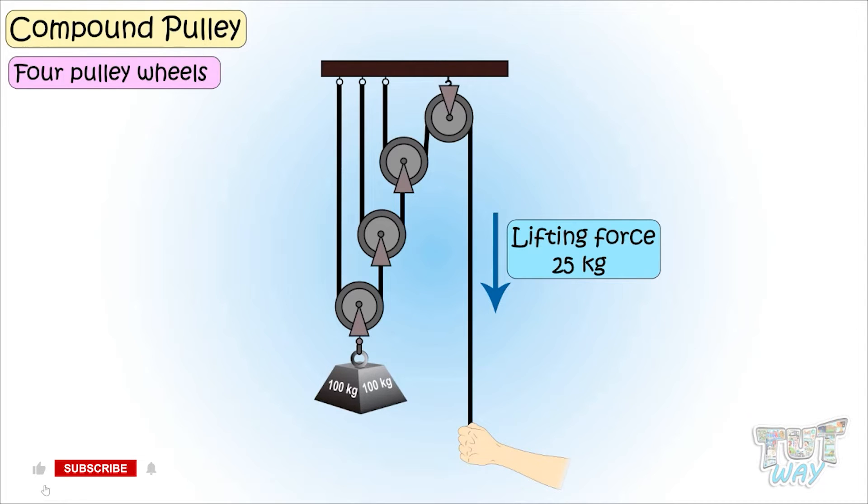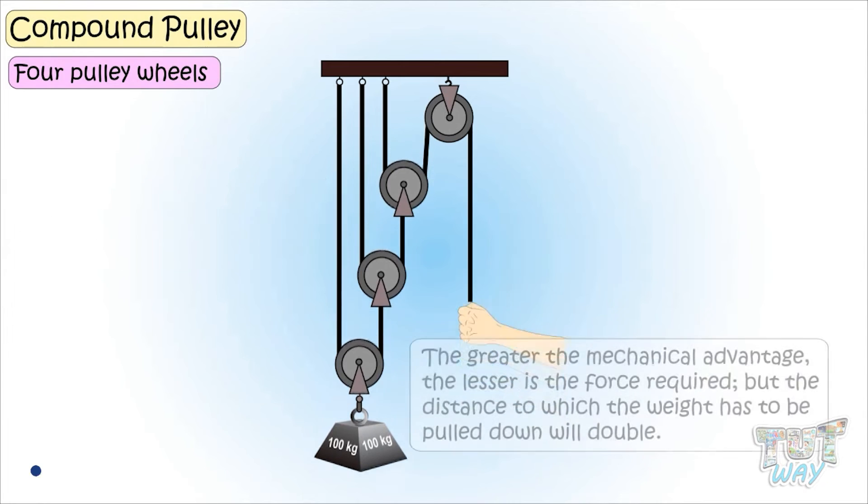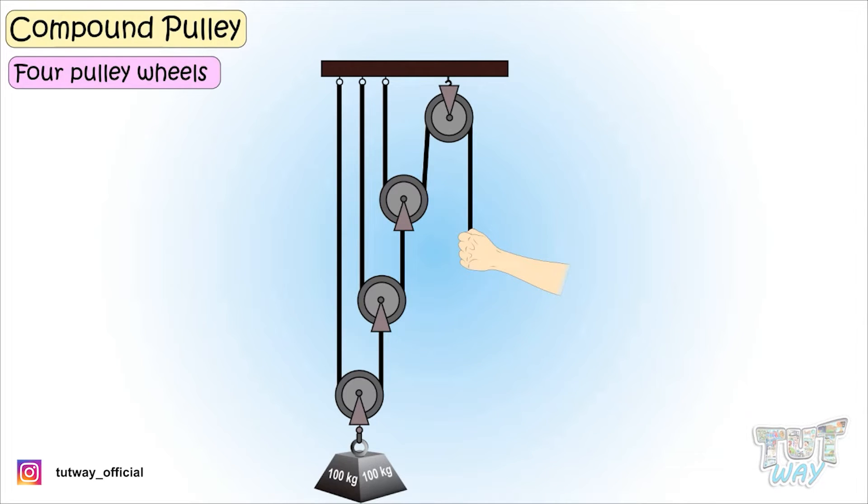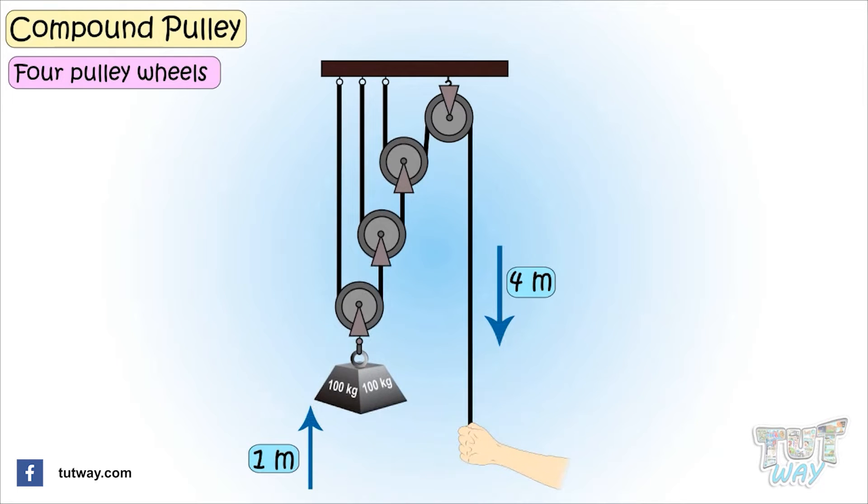So it's giving you a lot of mechanical advantage. That is, it's multiplying the force applied by you by four. So it's giving mechanical advantage of four, and we learnt the bigger mechanical advantage, the lesser the force you need, but the greater the distance you have to use that force. That is, to raise the weight by one meter, you have to pull the loose end of the rope by four meters.